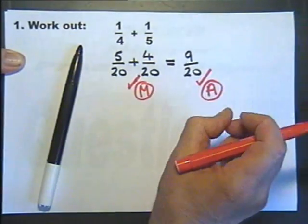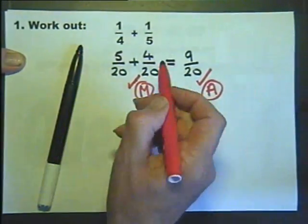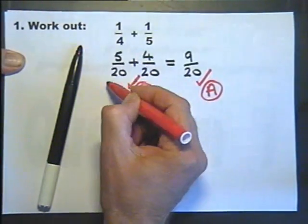Method marks, answer marks, accuracy marks - getting it right marks. Method marks are showing you how you do it.